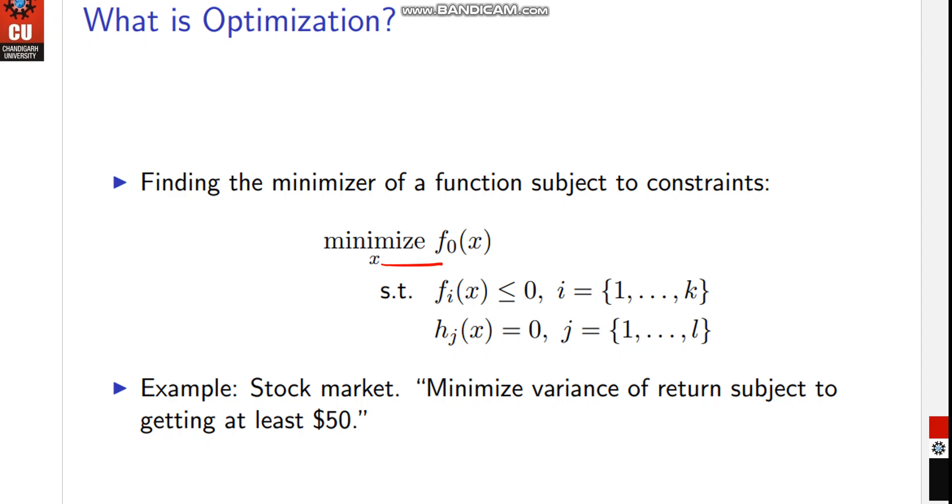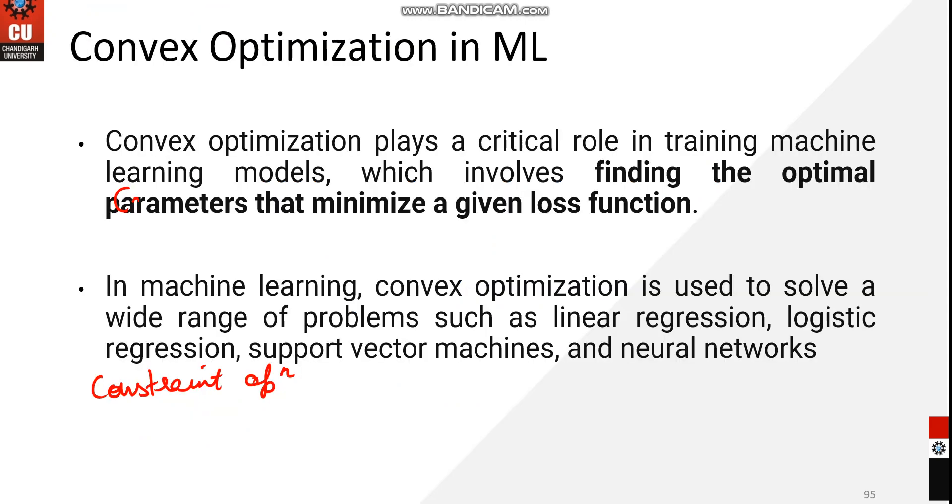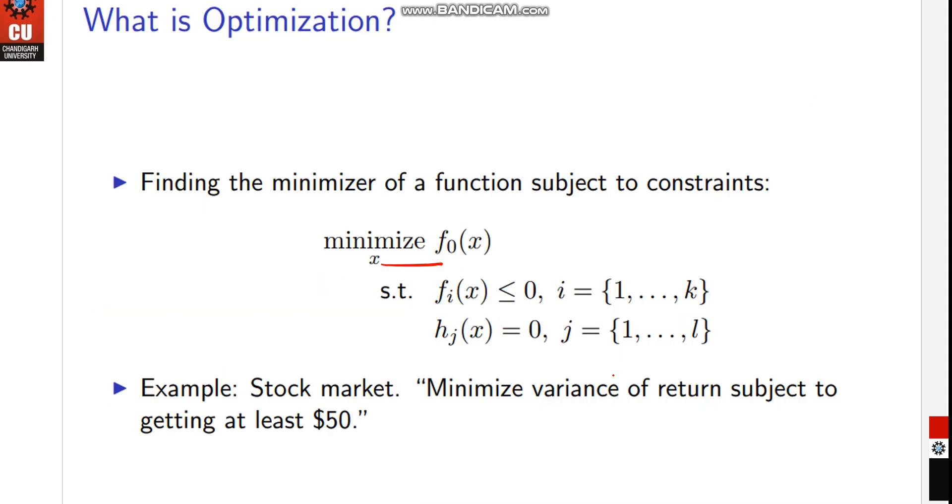Here h_j means heuristic value, as we have already discussed about these things. In simple terminology, convex optimization simply deals with providing the optimized best model with certain functions. The main areas when we talk of applications include linear regression, logistic regression, support vector machines, and neural networks.